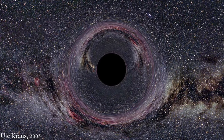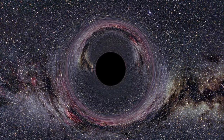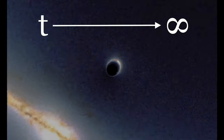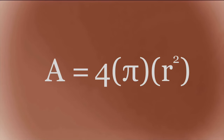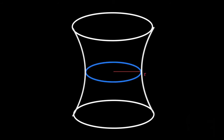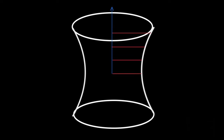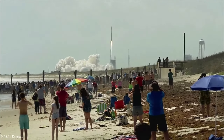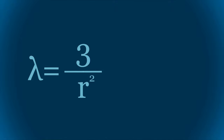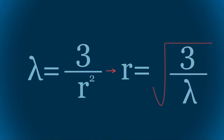De Sitter space actually has a horizon — a cosmological horizon of which any information emitted past that horizon will never reach you even as t goes to infinity. The area of that horizon is given by 4πr², where r is the radius of the curvature at any moment — it's not a fixed value, it changes over time. The curvature radius increases as time goes on as the constant curvature keeps expanding the space. And since the cosmological constant is connected to the curvature radius through lambda = 3/r², we can see that the radius itself is given by r = sqrt(3/lambda).